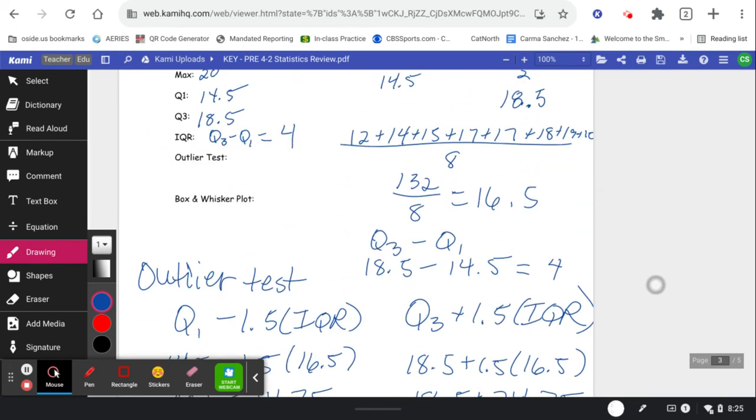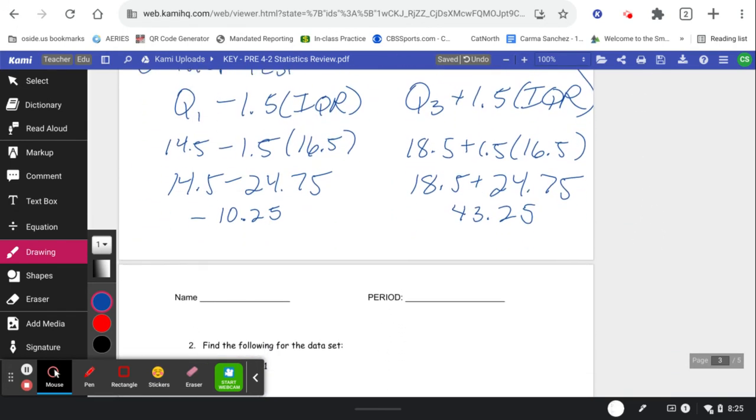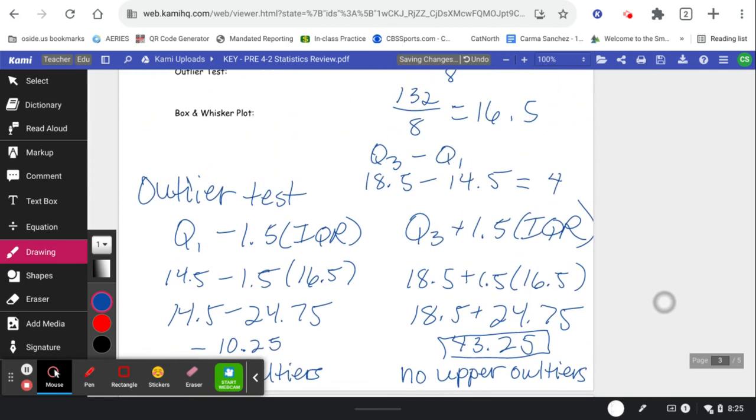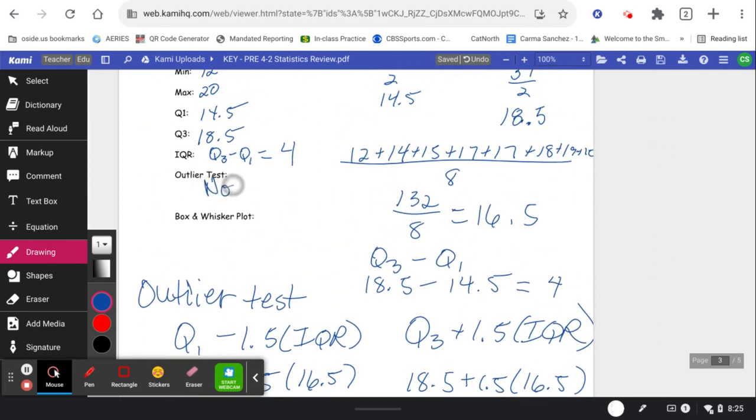So taking a quick peek, my highest data is a 20. So there are no upper outliers because there's no data bigger than 43.25. 20 is my max. Over here, there's no lower outliers because there's no data lower than the negative 10.25. So the answer is outlier test, there are none.